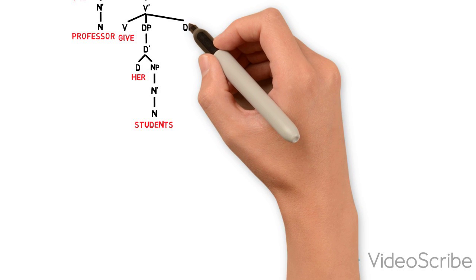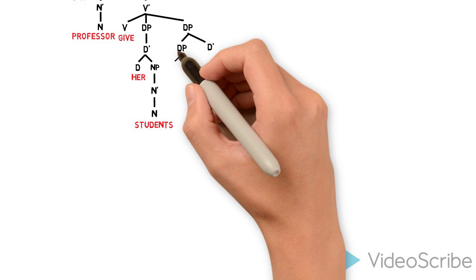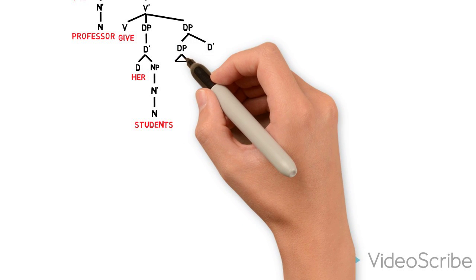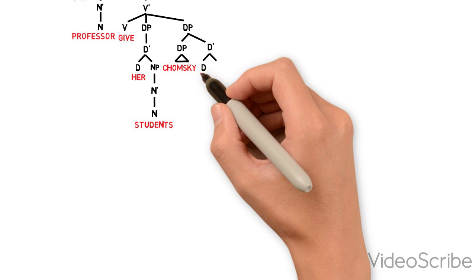The second object is a little more complex. We have in spec of DP the proper name Chomsky, which is itself a DP. Then we have in D the apostrophe S.